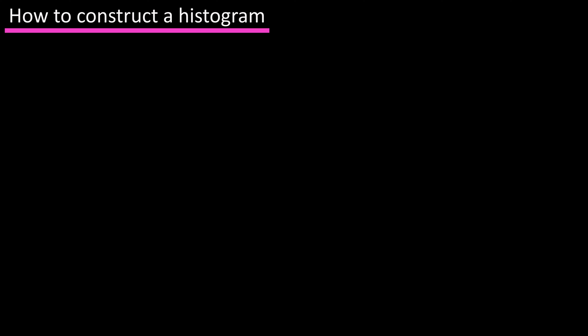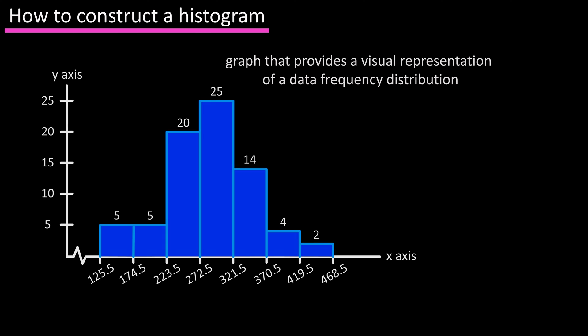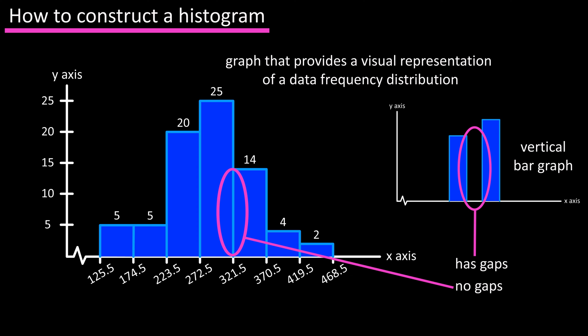In this video we're going to go over how to construct a histogram. A histogram is basically a graph that provides a visual representation of a data frequency distribution. It's different from a vertical bar graph in that it has no gaps between the bars.